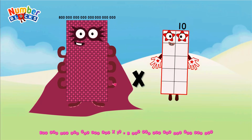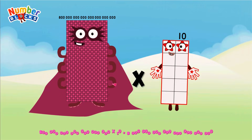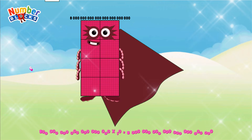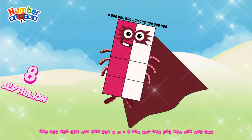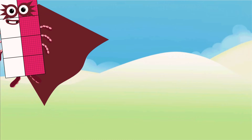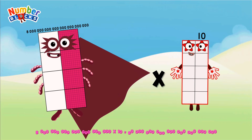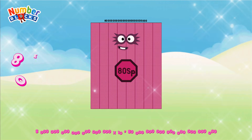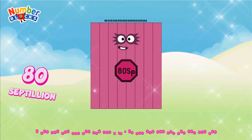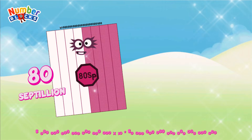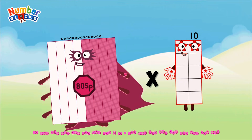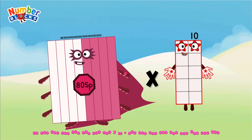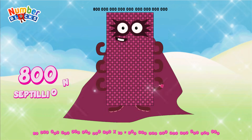800 sextillion multiplied by 10 equals 8 septillion. 80 septillion multiplied by 10 equals 800 septillion.